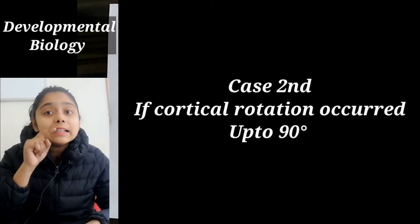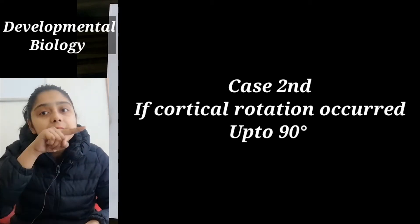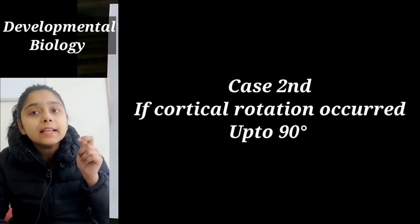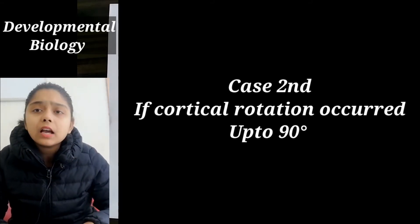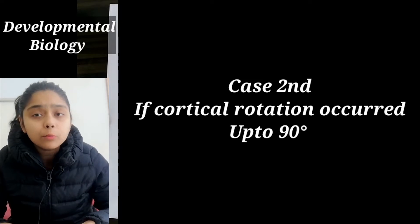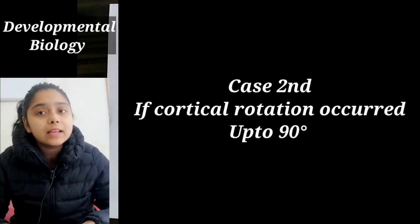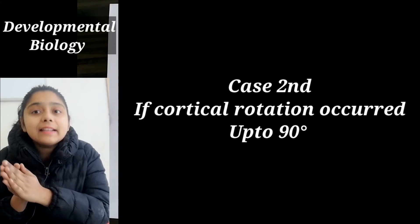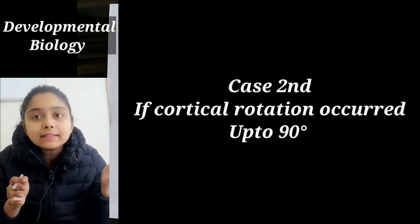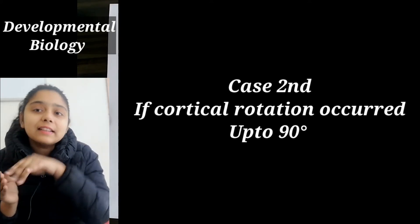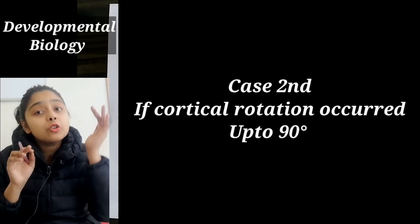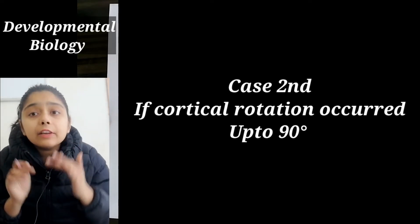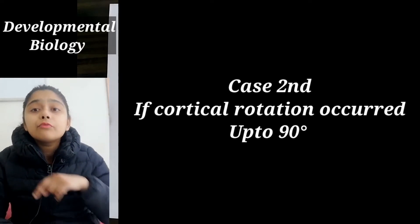Now, if cortical rotation is 30 degrees instead of the normal 90 degrees, does amphibian development get blocked? No. But development will start from the ventral side instead of the dorsal side. The events normally on the dorsal side will now occur on the ventral side, and vice versa.